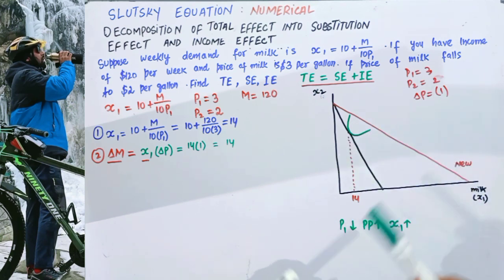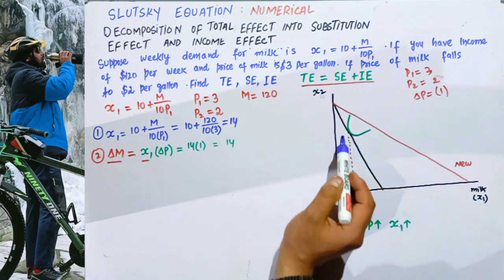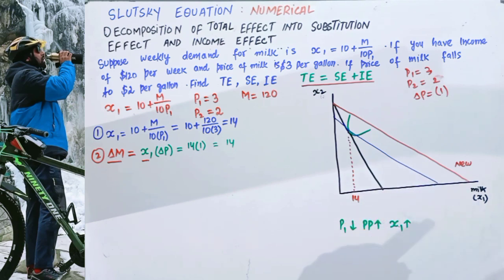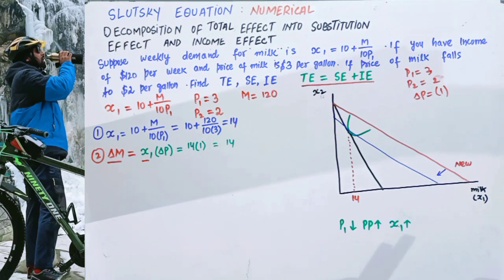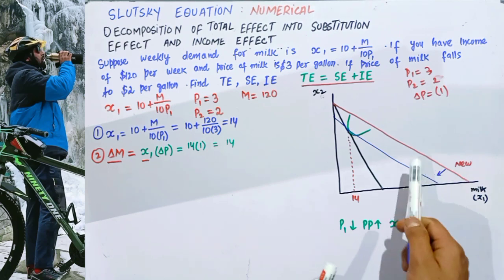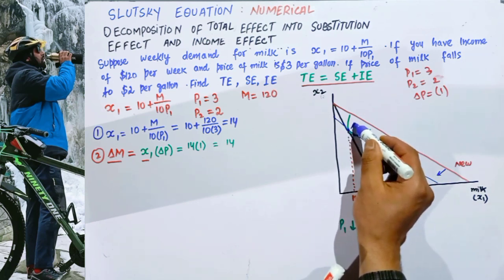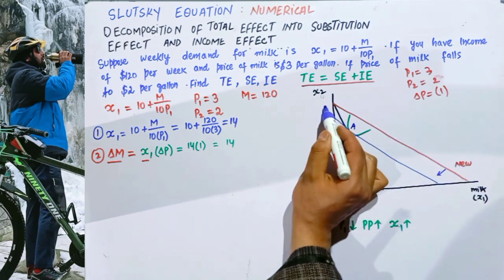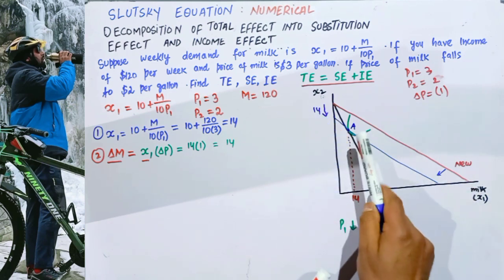On the graph, this is shown by shifting the new budget line parallel to the left until it passes through the initial point A. This gives us the compensated budget line. We are taking away $14 from the consumer so that the initial bundle is just affordable.